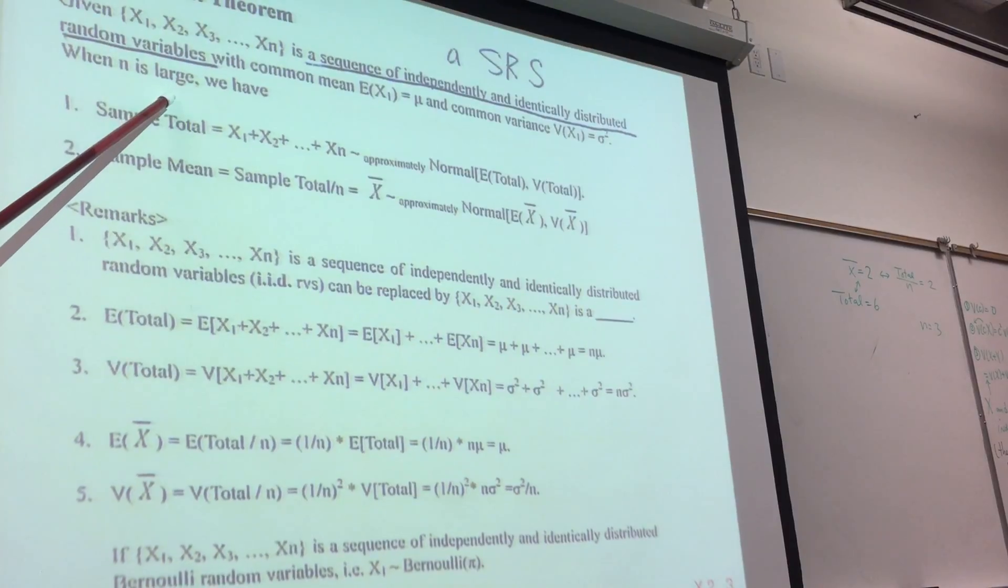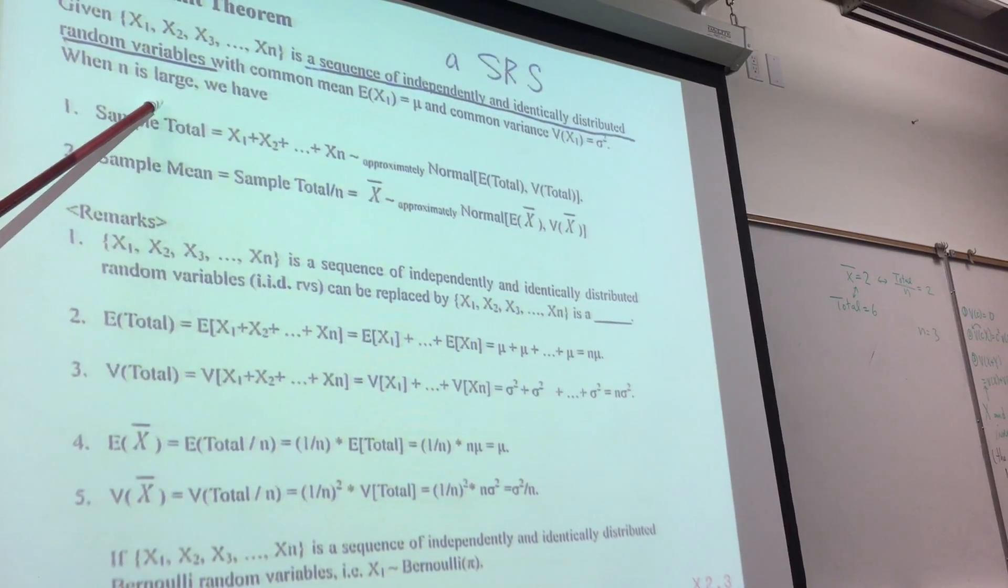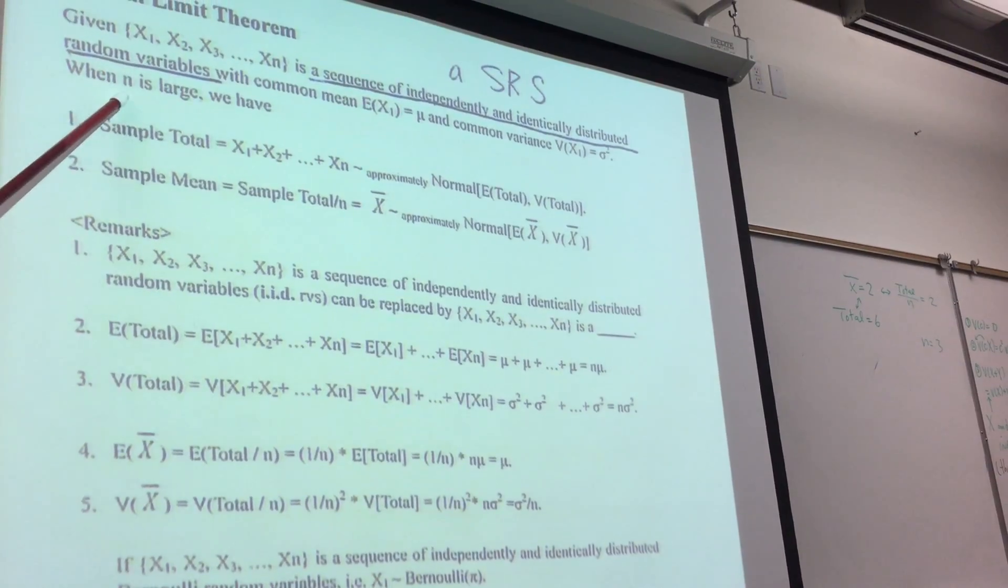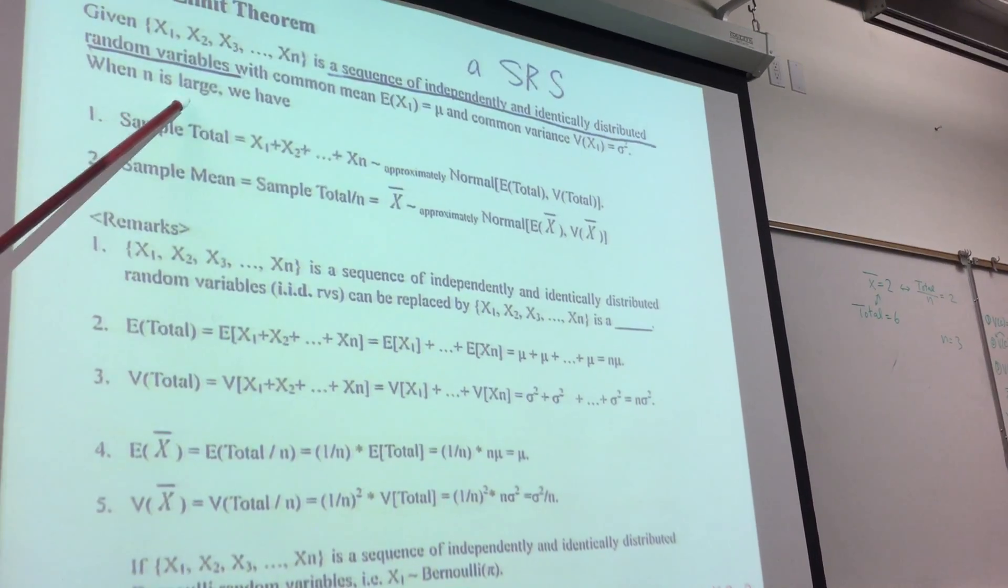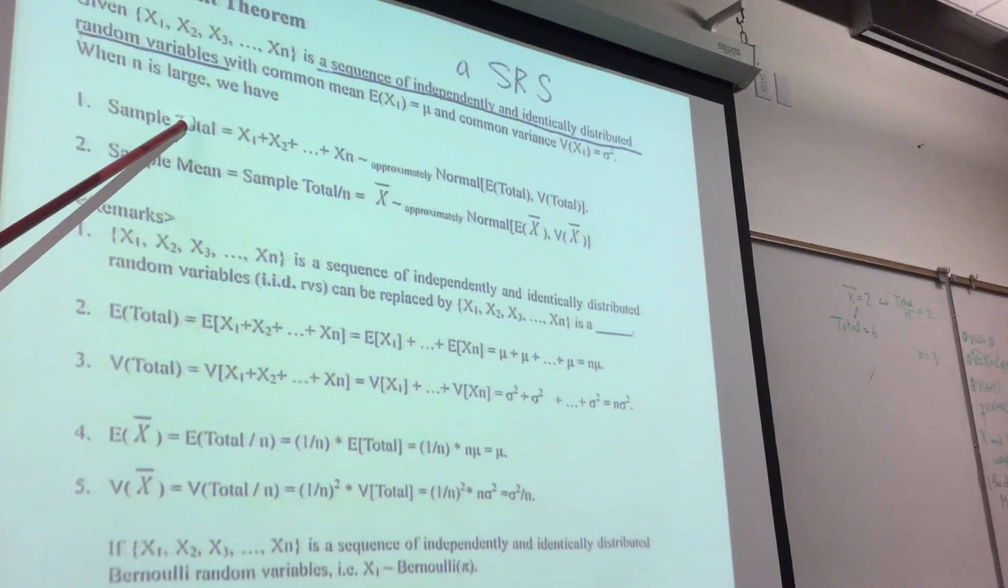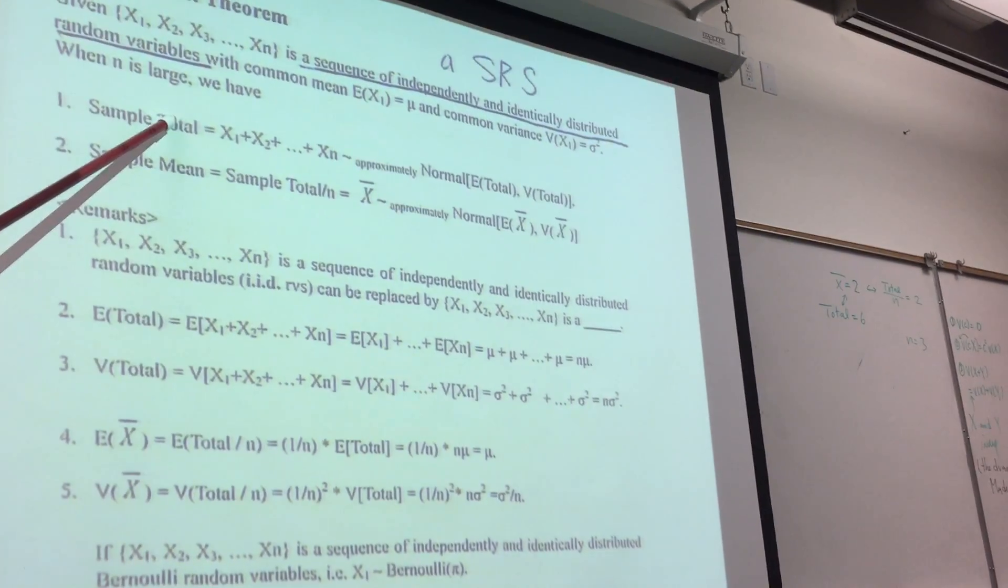Different textbooks have different criteria. Some books say n ≥ 25 is big enough. Some books say it needs to be ≥ 30. Some books say it needs to be at least 40. For our course, we use n ≥ 25.